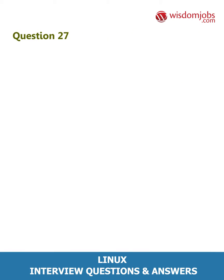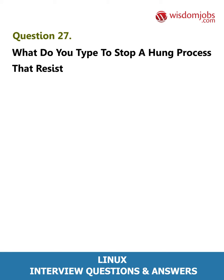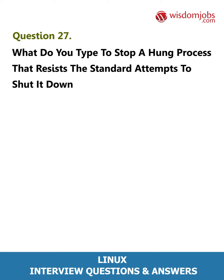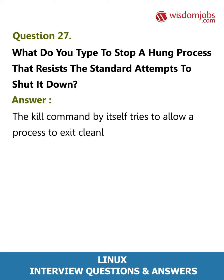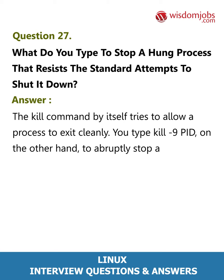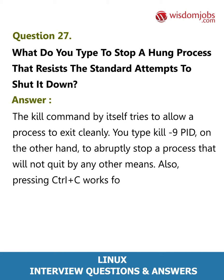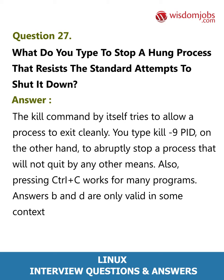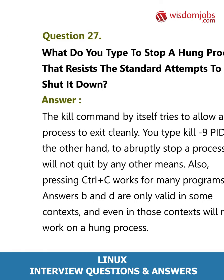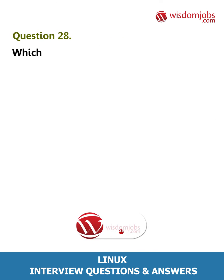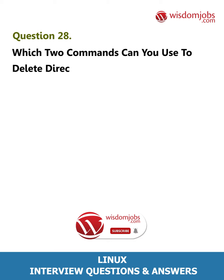Question 27: What do you type to stop a hung process that resists the standard attempts to shut it down? Answer: The kill command by itself tries to allow a process to exit cleanly. You type kill -9 PID to abruptly stop a process that will not quit by any other means. Pressing Ctrl+C works for many programs, but some answers are only valid in certain contexts and will not work on a hung process.